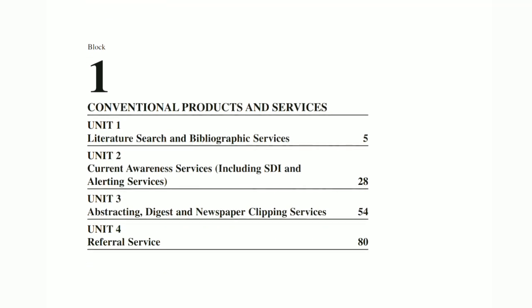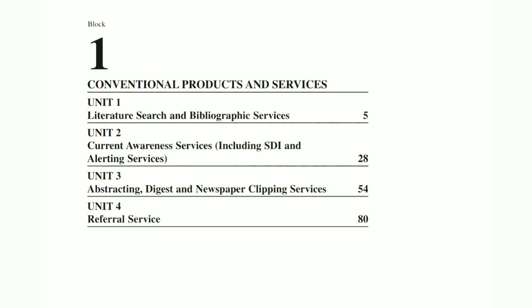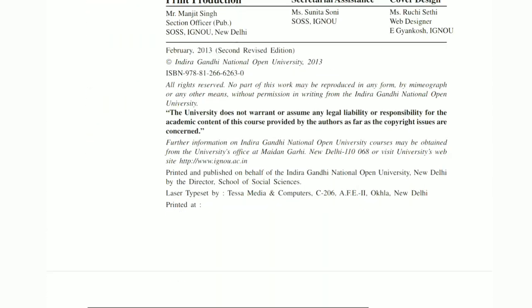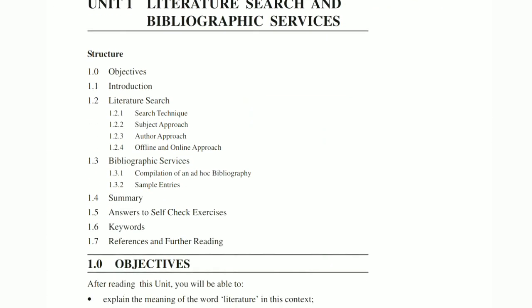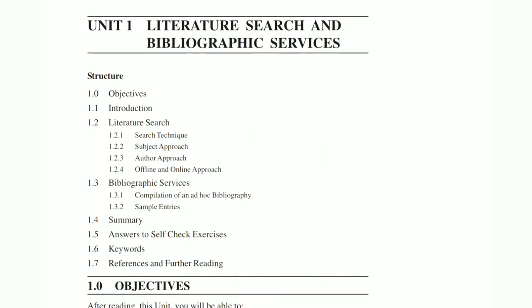Block 1 is Conventional Products and Services, which covers Unit 1: Literature Search and Bibliographic Search. Unit 3 on Abstracting, Digest and Newspaper Clipping Services has already been covered. We will now cover the remaining units, starting with the first unit: Literature Search and Bibliographic Search, which is a very important topic.